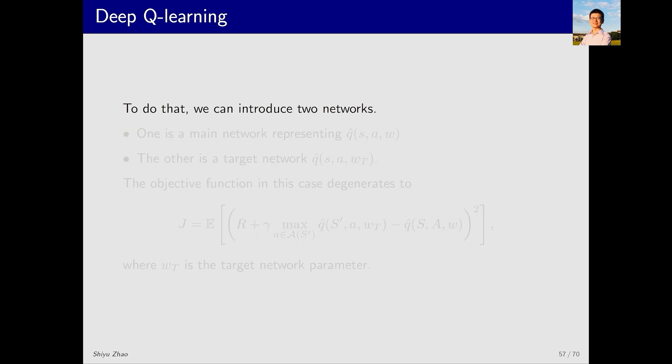To implement this technique deep Q-learning introduces two networks. Each network corresponds to a function. The first network is called the main network, which corresponds to this function, and its parameters are W. The second network is the target network, and its parameters are W_T, where the subscript T stands for the target.